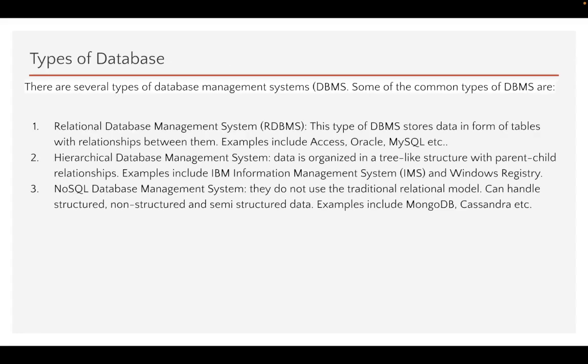There are several types of DBMS, but three common ones are: the relational database management system (RDBMS), the hierarchical database management system, and the NoSQL database management system. The RDBMS stores data in the form of tables with relationships between them. Examples include Microsoft Access, MySQL, and Oracle.